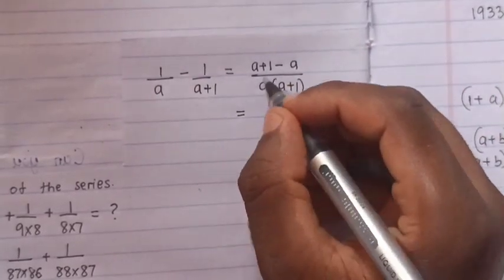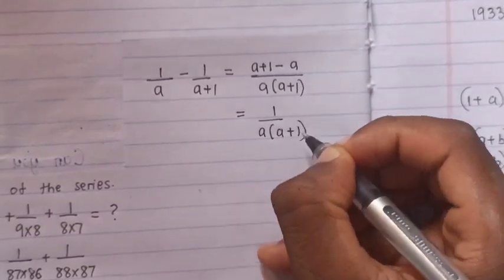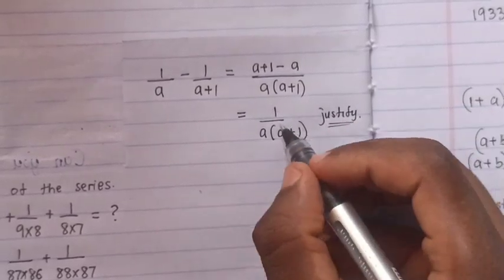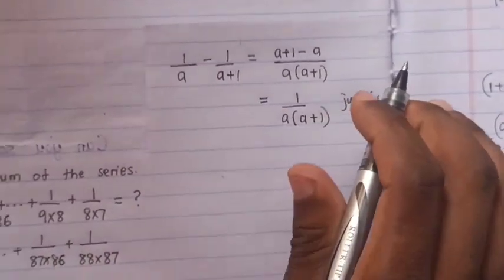Here it's same as 1 over 8, 8 plus 1, so here is how to justify. Justify this one is same as this one, so it will be this.